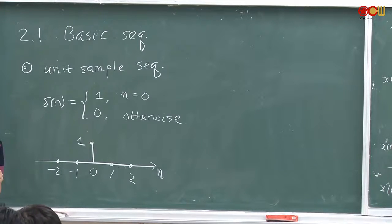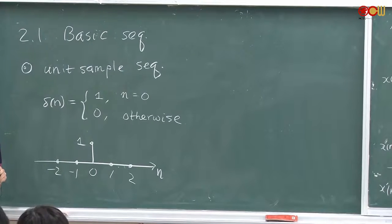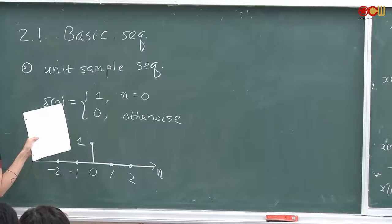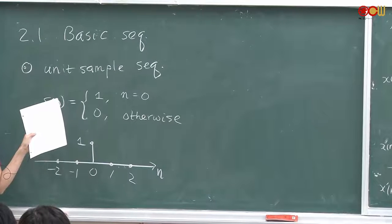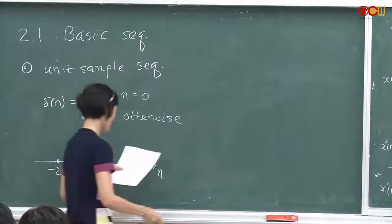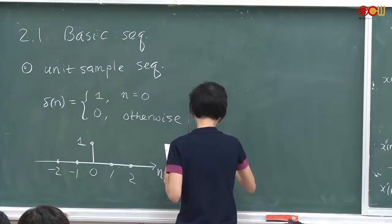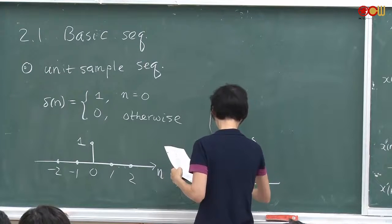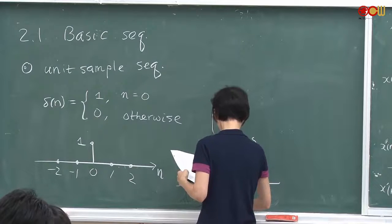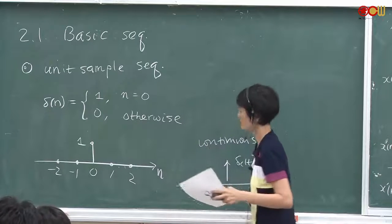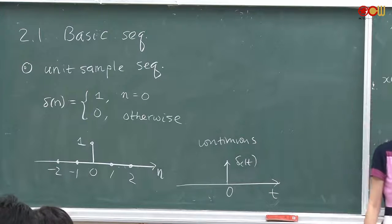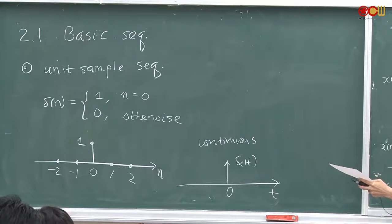Do we have something like this in continuous time — a signal that is only non-zero at one point and 0 everywhere else? Yes, in continuous time we would have an impulse. It's only non-zero at time equal to 0 and 0 everywhere else.